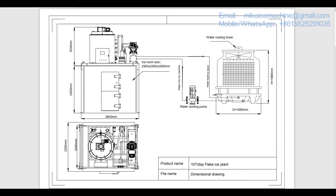This is the dimension of the ice room. With this dimension, the ice storage capacity is 5 tons. For a 10 ton per day flake ice plant, we always recommend 5 ton ice storage capacity. We can see the dimensional information here — the height of the machine and the height of the ice room, as well as the length of the ice room and ice machine. All the information is clearly shown here.